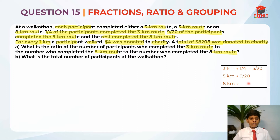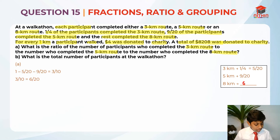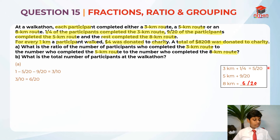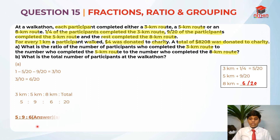We do not know the fraction for 8km, so let's find that out. 1 whole minus 5 over 20 minus 9 over 20 gives us 3 over 10. But 3 over 10 doesn't have the common denominator of 20, so converting it gives us 6 over 20. So the fraction for 8km is 6 over 20 participants. Now it's easy to find the ratio: the total is 20, 8km is 6 units, 5km is 9 units, and 3km is 5 units. They're asking for 3km to 5km to 8km, so the answer is 5 : 9 : 6.